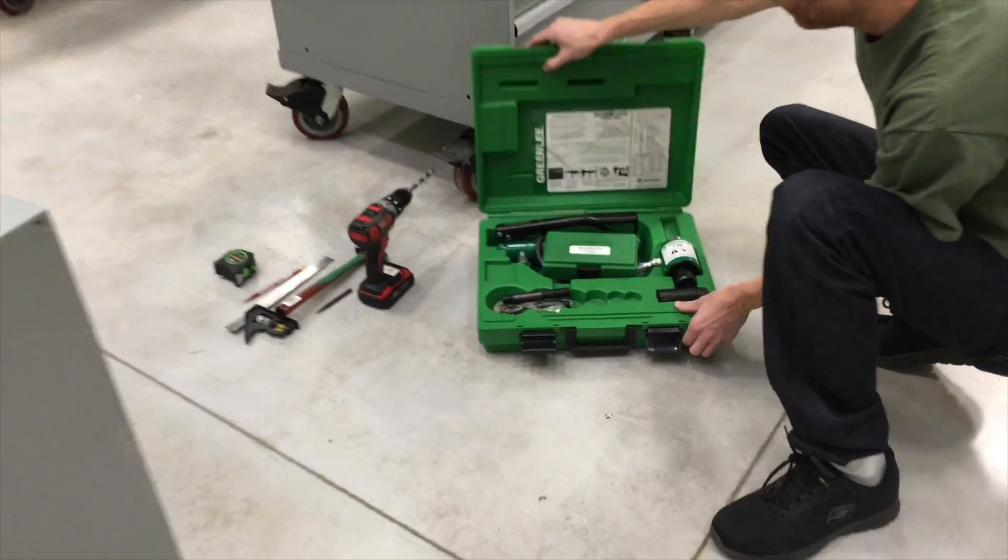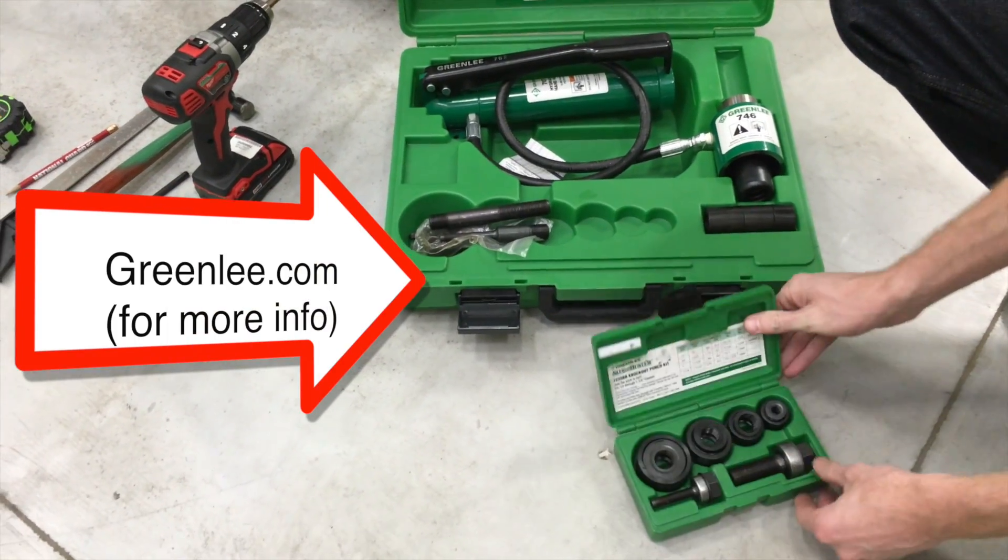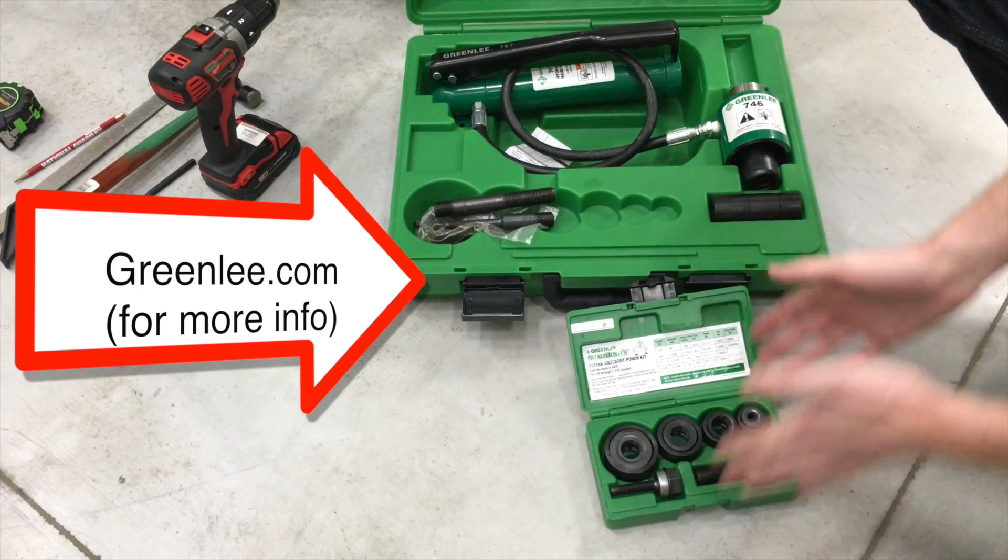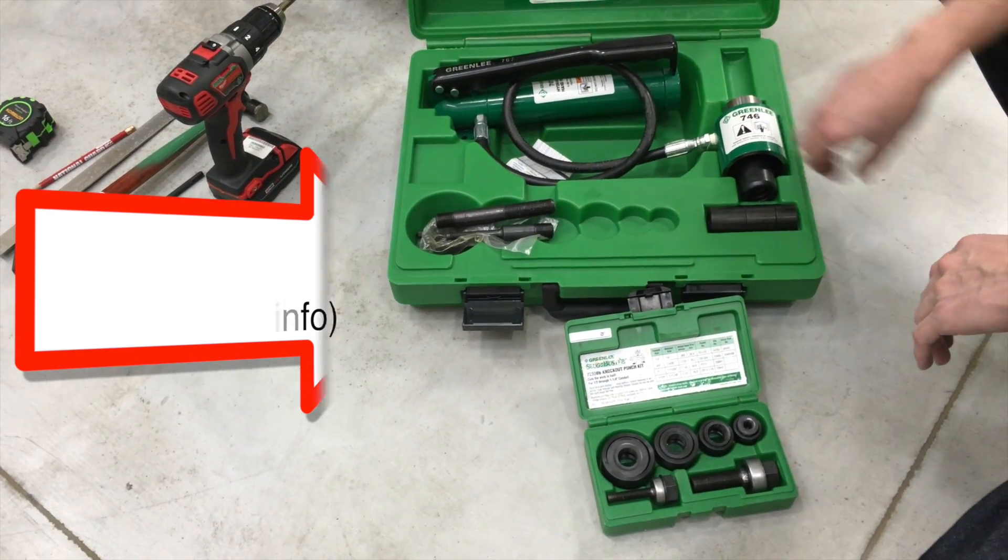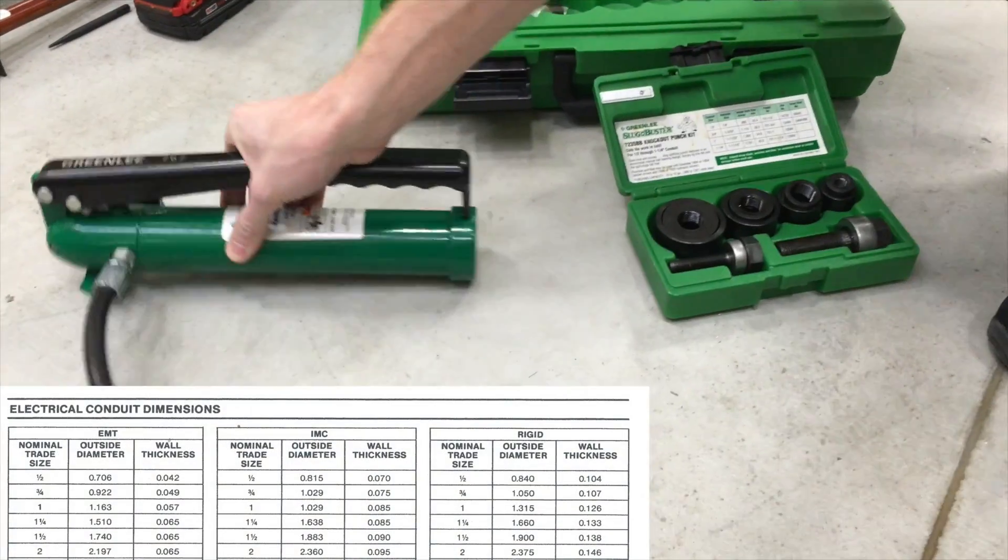So here's our kit we're going to start with. So it comes with a manual section here, which you could use a wrench to draw those together. But fortunately we have the hydraulic add-on to it. Get everything out and laid out so it's ready to go.